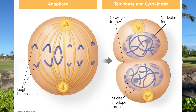The next stage is anaphase, with the separation of the sister chromatids due to the cleavage of cohesion proteins, and thus the kinetochores can break apart. The sister chromatids are now individual chromosomes. Each of the microtubules will start to shrink in size, pulling the chromosomes away from each other to opposite ends of the cell.